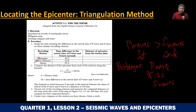The same applies to Puerto Princesa — there, the time difference is 41.6 seconds. And then in Davao, it is 27.2 seconds — the time difference between the P wave and the S wave. And then there is a computation to determine how far they are from the epicenter.